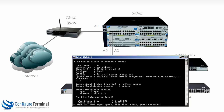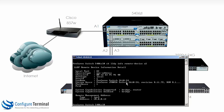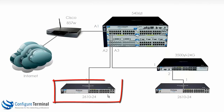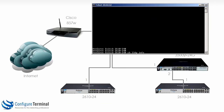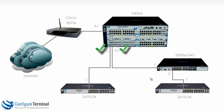Looking at LLDP details for interface A3 on the 5406 shows local interface A3 has the 3500 YL connected, along with its IP address. Looking at port A2 shows the 2610-24 switch at IP address 10.0.0.12. To verify this, running 'show LLDP info remote devices' on that 2610 switch confirms that its port 1 is connected to the 5406 on port A2, which matches the diagram.